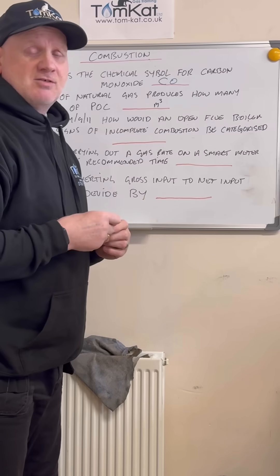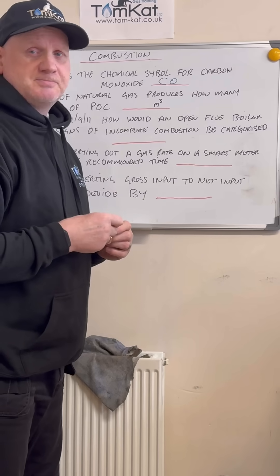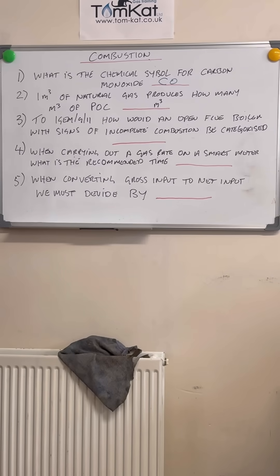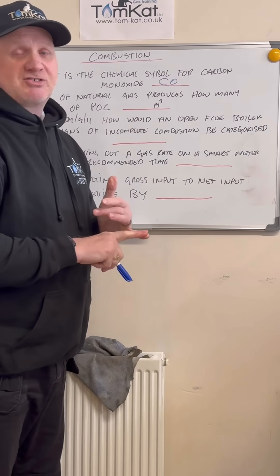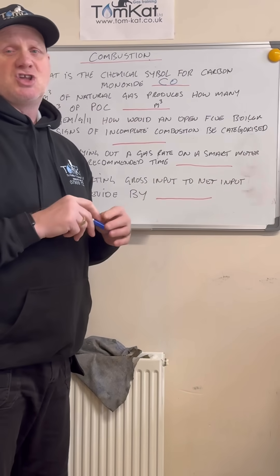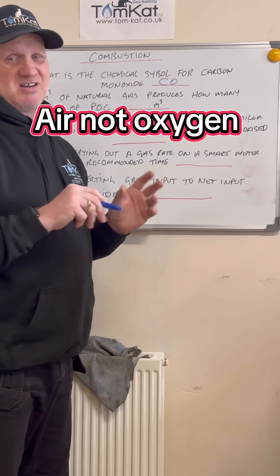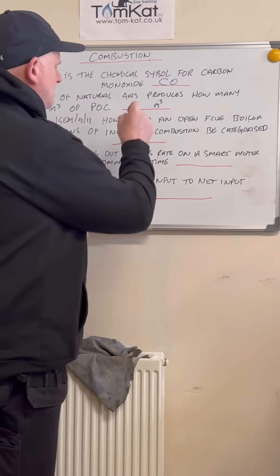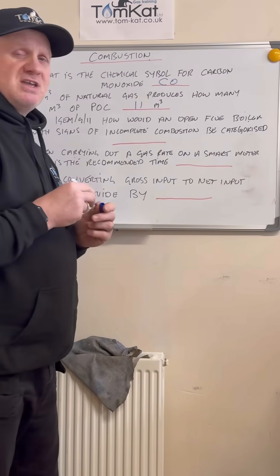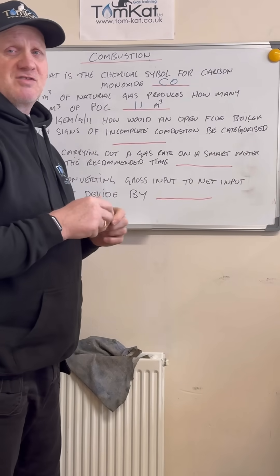Let's have a look at question number two. One metre cubed of natural gas produces how many metres cubed of products of combustion? Well, every one metre cubed of natural gas requires 10 metres cubed of oxygen or thereabouts, so it produces 11 metres cubed of products of combustion.